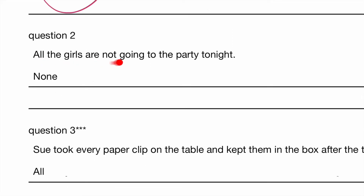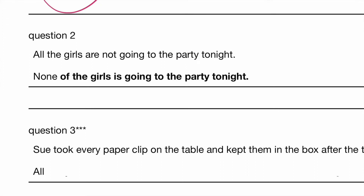All the girls are not going to the party tonight — we are using the future tense. So: none of the girls is going. The difference is: 'all' is plural for countable nouns, therefore 'are' is plural. 'None of' is singular, therefore 'is' is singular.